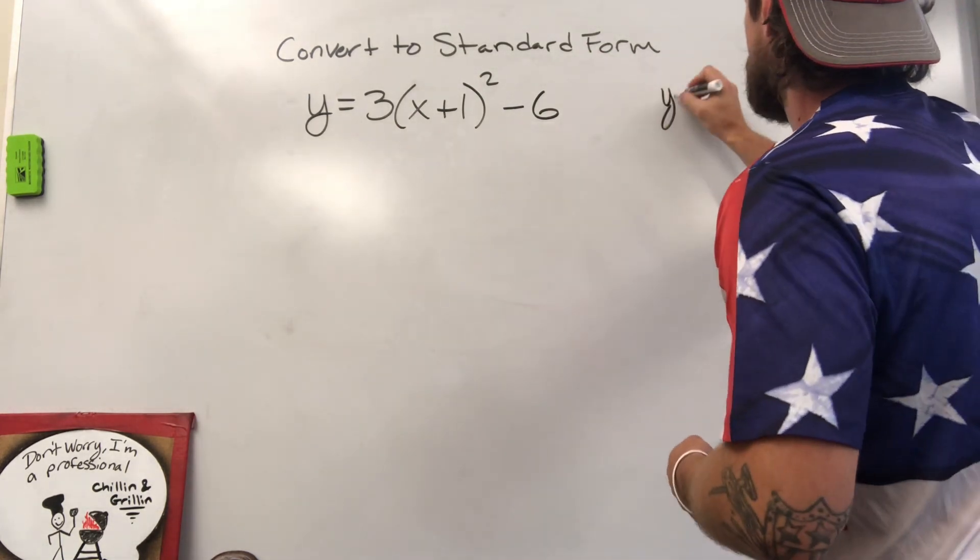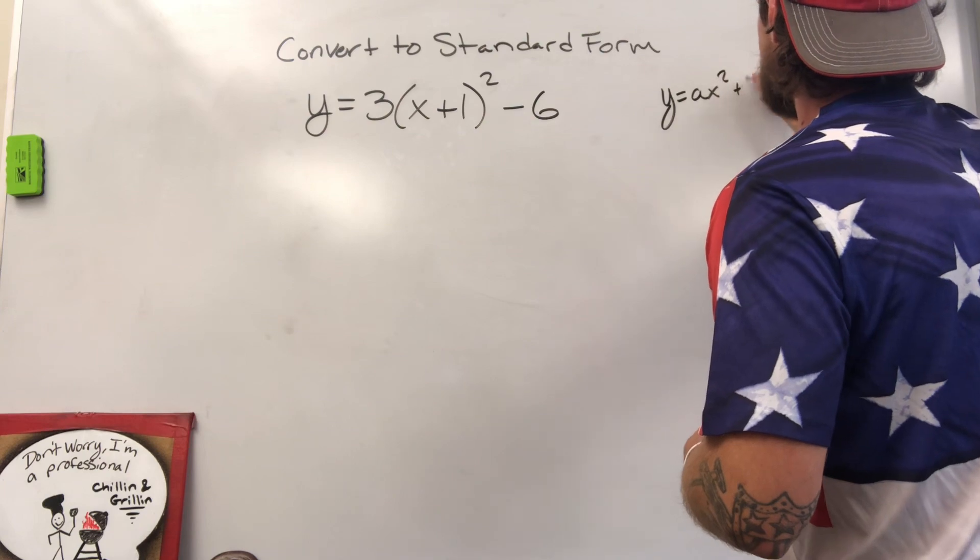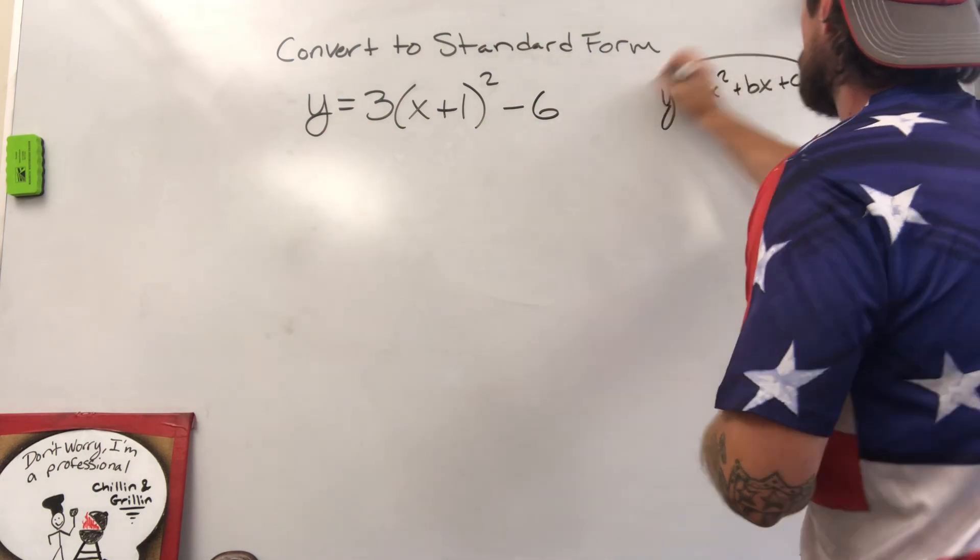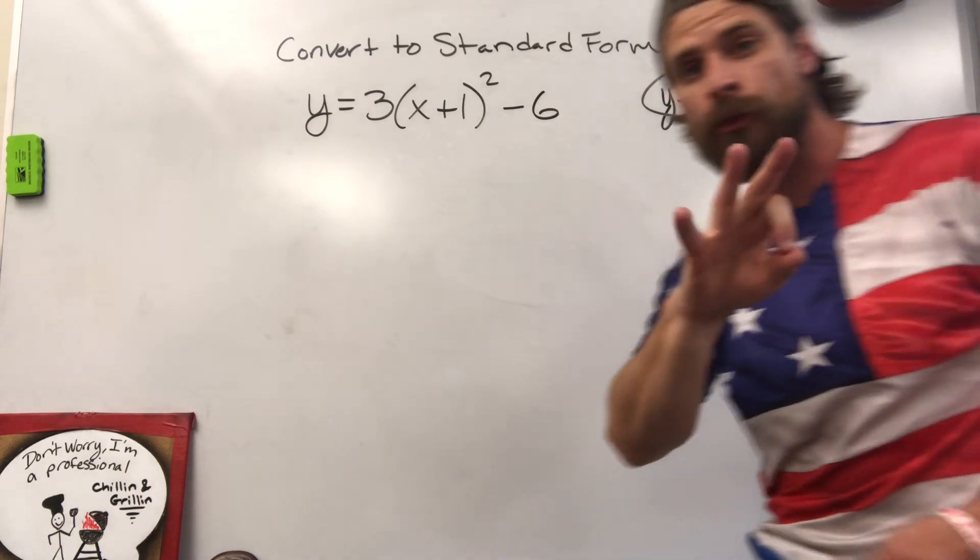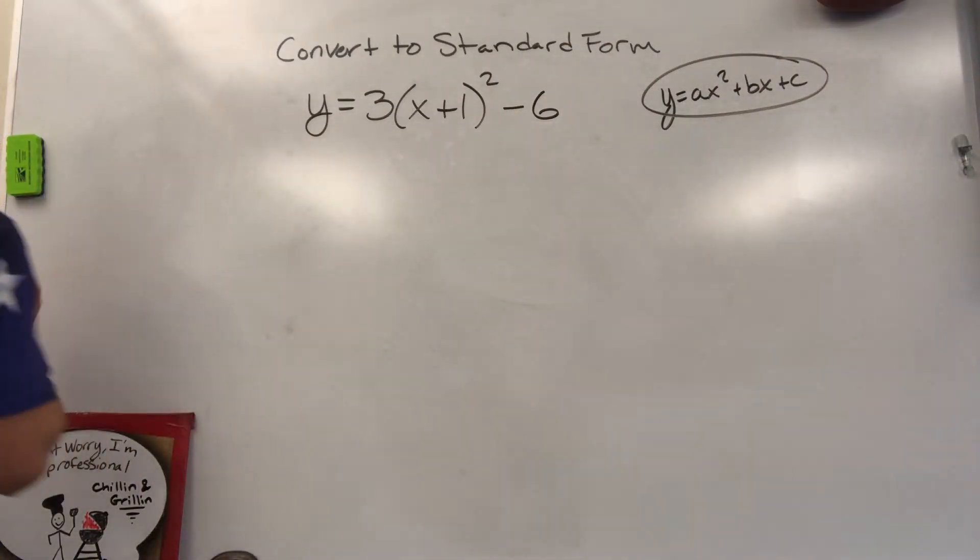Standard form looks like y equals ax squared plus bx plus c. You should already know that by now if you're being asked to do this, and we can do it in three easy steps. Let's break it down and get started.